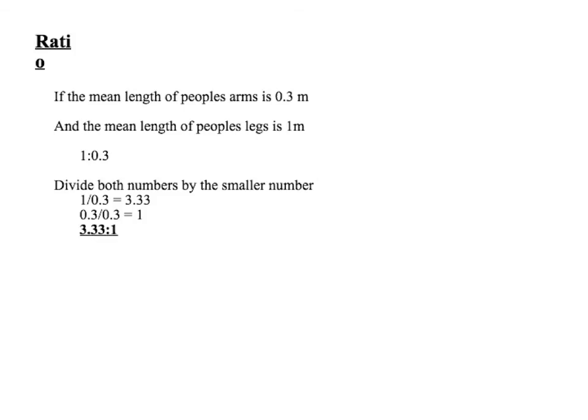This is the ratio. You could be asked to calculate the ratio — I've seen this a couple of times. So let's say the mean length of people's arms is 0.3 metres and the mean length of people's legs is 1 metre. The ratio is 1 to 0.3, but we want it as something to 1. So divide both numbers by the smaller number: 1 divided by 0.3 is 3.33, and 0.3 divided by 0.3 is 1. So we've got a ratio of 3.33:1.